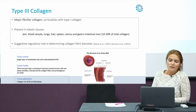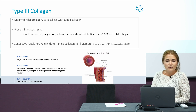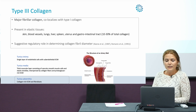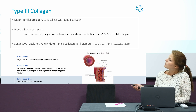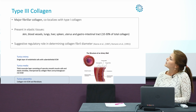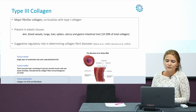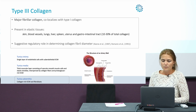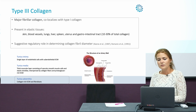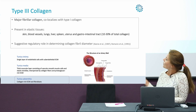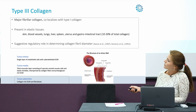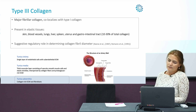Type 3 collagen is one of the major fibrillar collagens and it mainly co-localizes with type 1 collagen. It is mainly present in elastic tissues such as skin, blood vessels, lungs, liver, spleen, uterus, and the gastrointestinal tract, where it makes up about 10 to 30% of the total collagen. In the arterial wall, it is mainly present in the tunica adventitia.